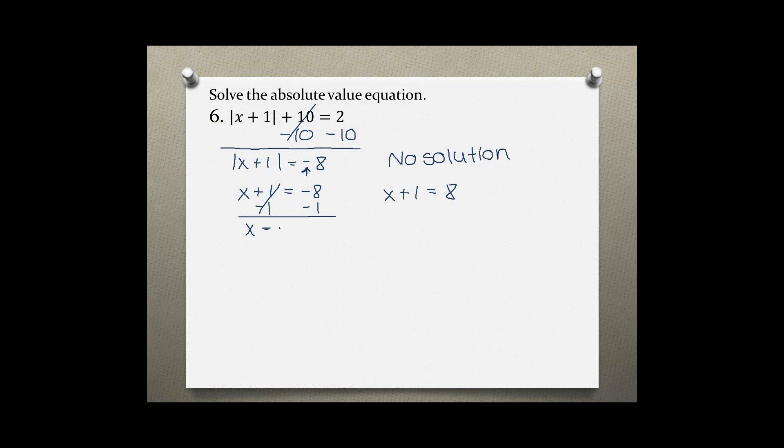So x equals negative 9, and over here you would subtract 1 from both sides and x equals 7.